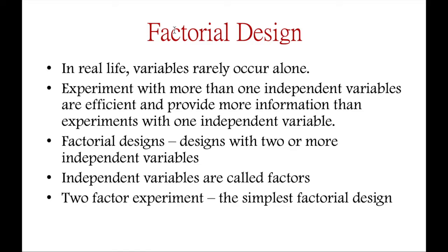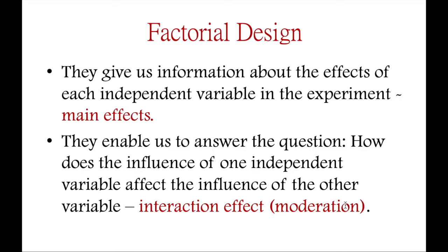Even if it is a non-experimental design, if you have two predictor variables both of which are categorical in measurement, you can also use two-way analysis of variance. In the context of an experiment, a factorial design is an experimental design that has two or more independent variables. A two-factor experiment is the simplest kind of factorial design. So in factorial designs or even non-experimental designs involving two categorical predictors, we can use two-way ANOVA.